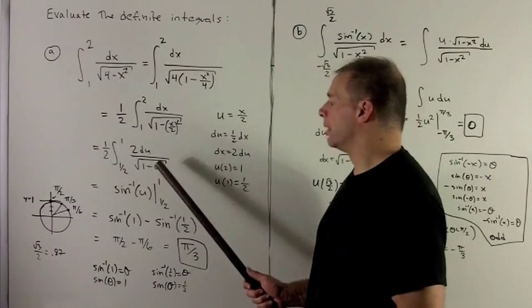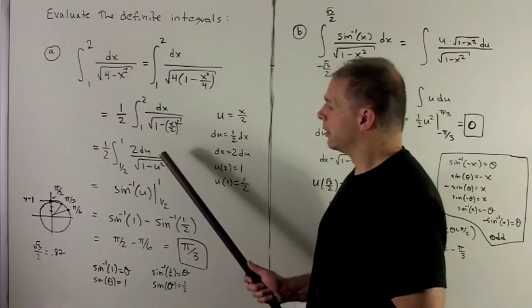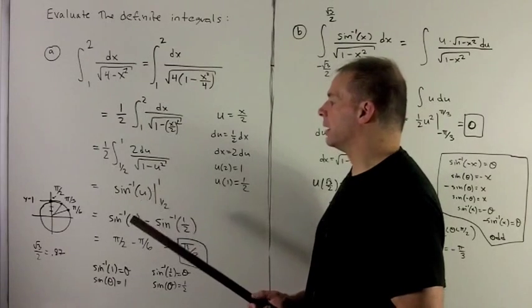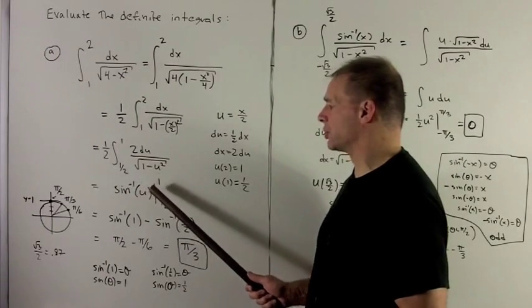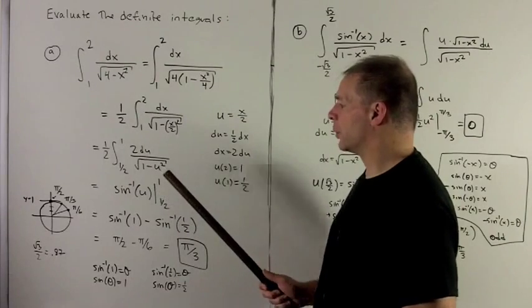The 2's cancel, and I'm just left with the derivative of inverse sine. So my anti-derivative is sine inverse u from a half to 1.